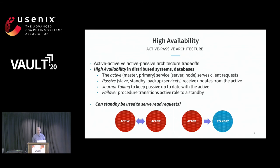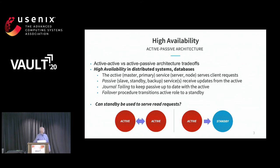In distributed systems in general and databases in particular, high availability is an important feature. Usually an active-passive or master-slave architecture is implemented. There are other ways to provide high availability like active-active, but it's harder because you need to use coordination consensus algorithms like Paxos or Raft. It's easier for users, of course. But in HDFS we have active-standby — we call the passive node the standby node.